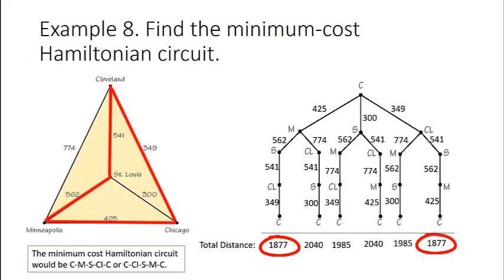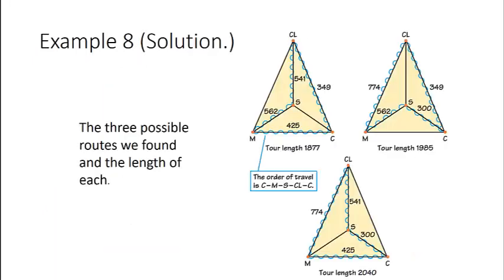Notice the distance is the same if we follow that same route but going backwards. Going Chicago, Cleveland, St. Louis, Minneapolis, Chicago. The distance is the same whether we go forward or backwards. So there is our answer. Here again to recap are the three possible routes that we found and their lengths.